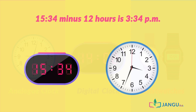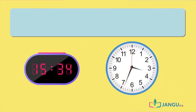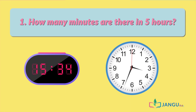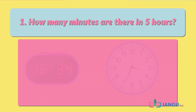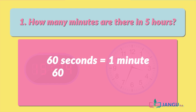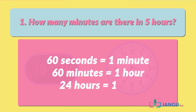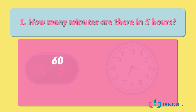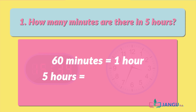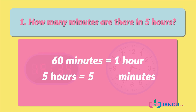Now let us answer some questions on conversion of time. Question 1: How many minutes are there in 5 hours? We know that 60 seconds make 1 minute, 60 minutes make 1 hour, and 24 hours make 1 day. So if there are 60 minutes in 1 hour, then 5 hours will be 5 times 60 minutes, which is 300. Therefore, there are 300 minutes in 5 hours.